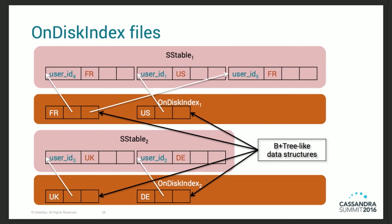How does it work on disk? This is my SSTable, and this is my on-disk index file. In this example, I'm indexing user country. Because SSTable files are immutable, in the index file I can store the offset of each partition from the beginning of the SSTable. So when reading back the raw data, I can skip a bunch of bytes very fast. This optimization is only possible because index files follow the same lifecycle as SSTables.